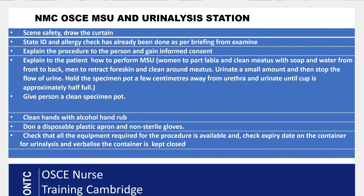After obtaining consent, explain to your patient how to collect a midstream specimen of urine. Instructions are slightly different for male and female patients, so please learn them as shown on screen. Once you have given the instructions, verbalize that you will give the patient a clean specimen pot. The assessor will then say 'assume the sample is here' and you can proceed to the urinalysis.